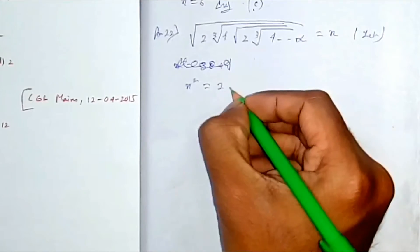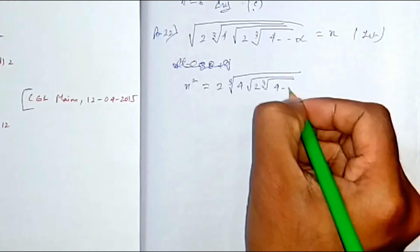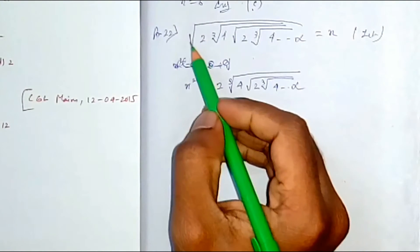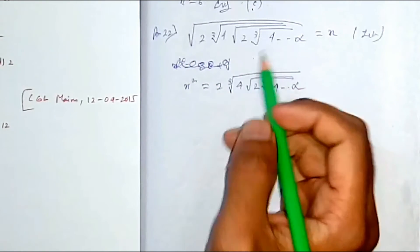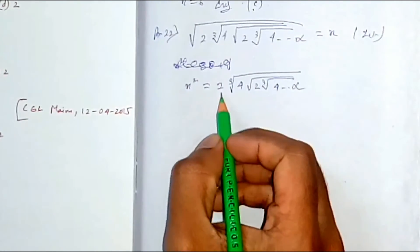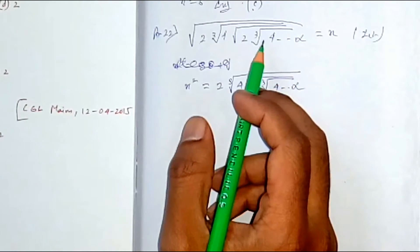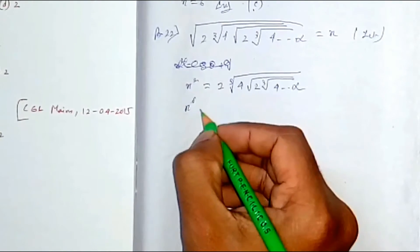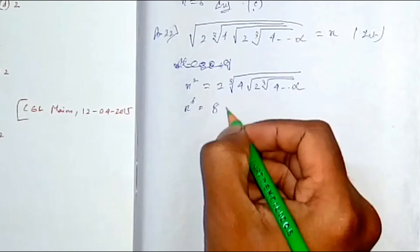By squaring, x² = 2·∛4·√(2·∛4·...). Now notice: after squaring you don't directly get x again — it is different from the previous problem. Here you need to do cubing as well. By cubing both sides of x², you get x⁶ on the left and 2³·4 = 8·4 = 32 on the right, along with the remaining nested expression.